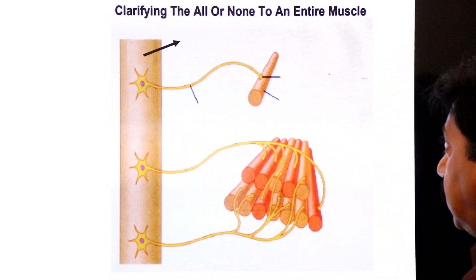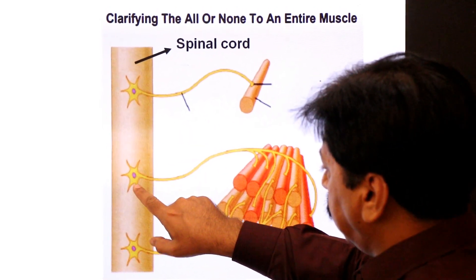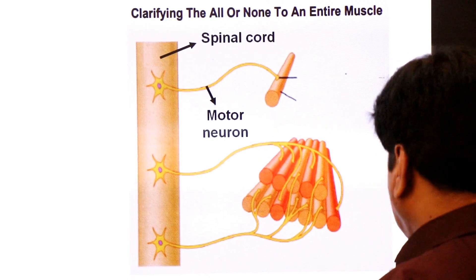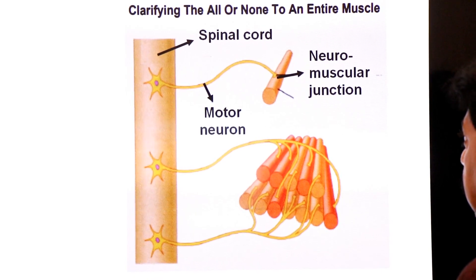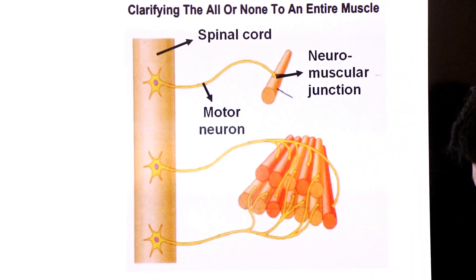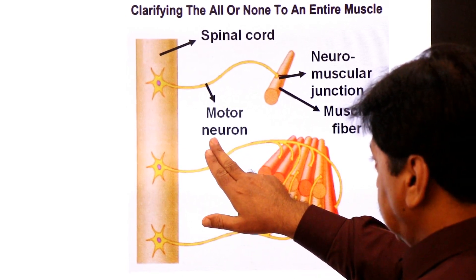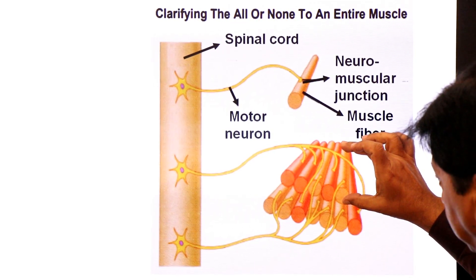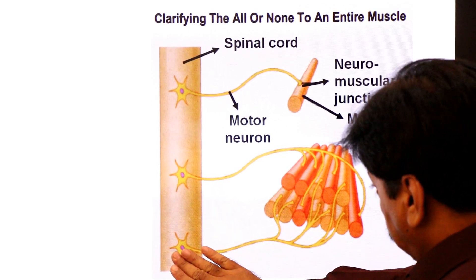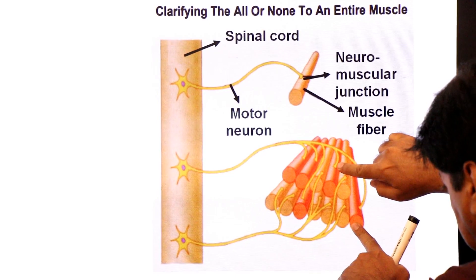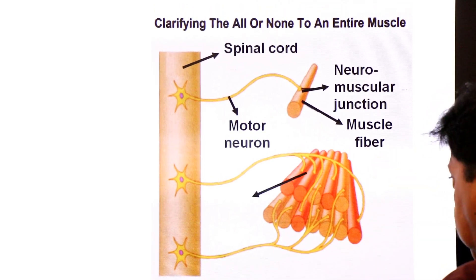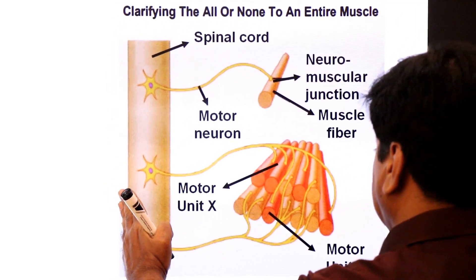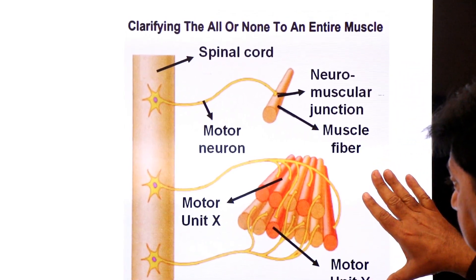Here you see a spinal cord. This is the spinal cord, and this is one motor neuron; this is the second motor neuron. Here you see a motor neuron and its fiber known as axon. This single motor neuron and its axon makes contact with muscle fibers — this point of contact is the neuromuscular junction. One motor neuron controls a group of muscle fibers known as a motor unit. In this picture you will see two motor units: motor unit X and motor unit Y. This picture clearly shows that one skeletal muscle is made up of multiple motor units.